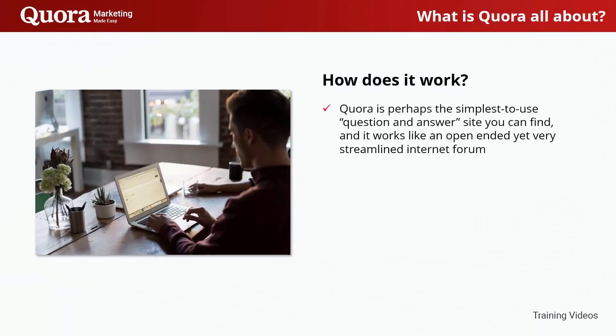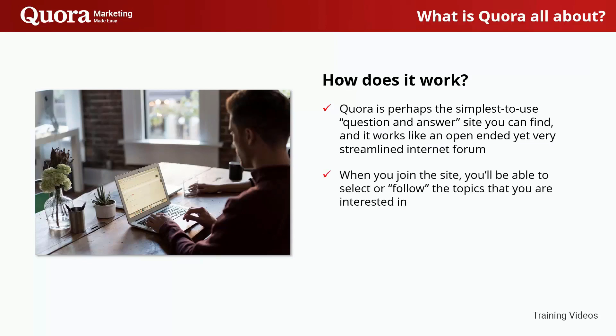How does it work? Quora is perhaps the simplest to use question-and-answer site you can find, and it works like an open-ended yet very streamlined internet forum. Anyone can join the site, and it just takes a few clicks to ask questions or give answers. When you join, you'll be able to select or follow the topics that you're interested in — topics you know about so you can help others, as well as topics you're curious about so you can ask questions and get custom answers.